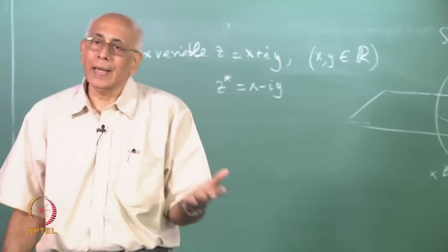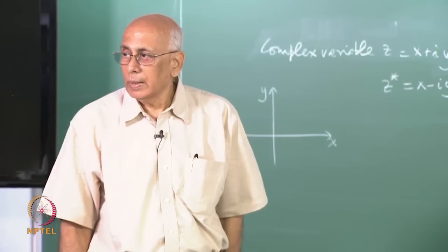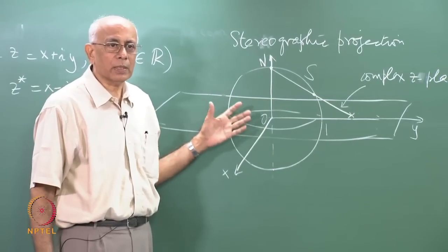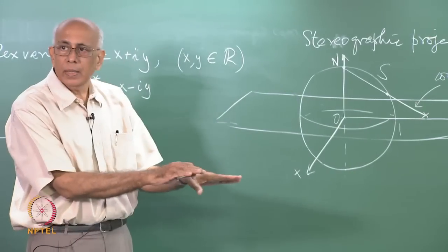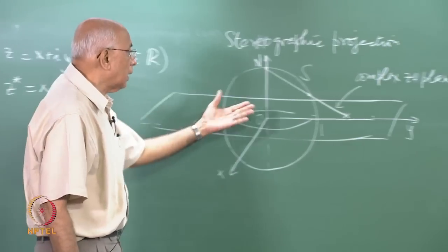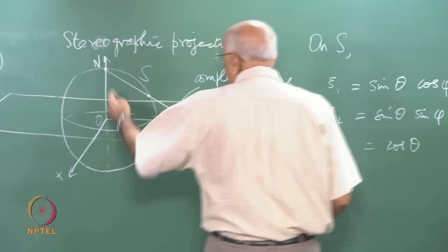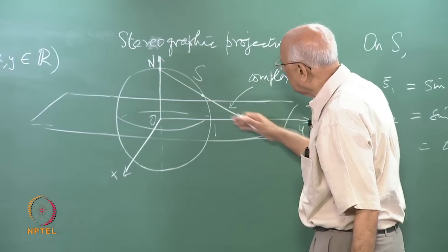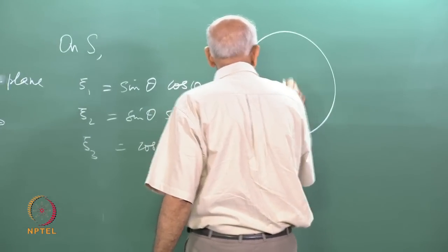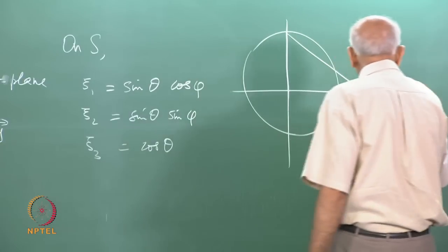We need equations connecting the coordinates psi one, psi two, psi three to the coordinates x and y on the plane. Remember there are only two independent coordinates since psi one squared plus psi two squared plus psi three squared equals one. Looking at the intersection in the psi three–psi two plane and using similarity of triangles, one can derive the mapping equations.